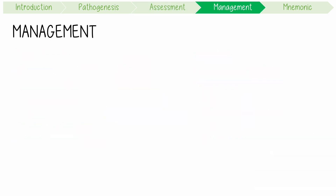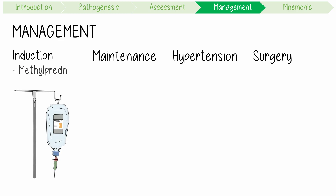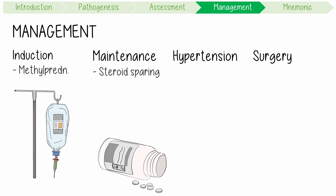The management of TAK involves inducing and maintaining remission, managing hypertension, and vascular surgery. Intensive induction often requires pulse methylprednisolone to induce remission. This is followed by maintenance therapy, often with corticosteroid-sparing agents that act as immunomodulators, such as azathioprine, methotrexate, and tocilizumab.